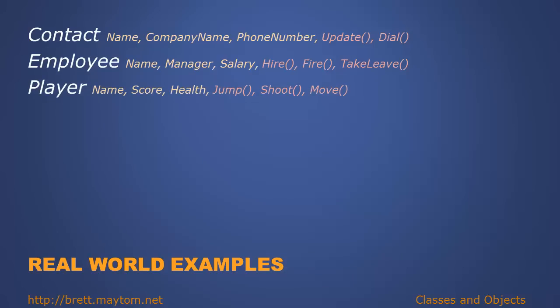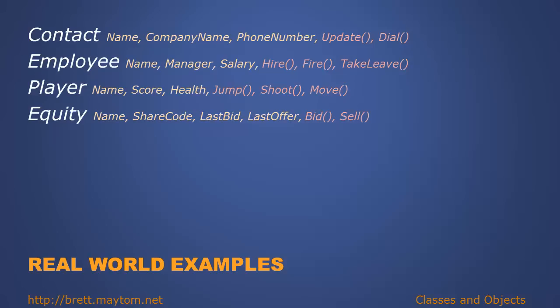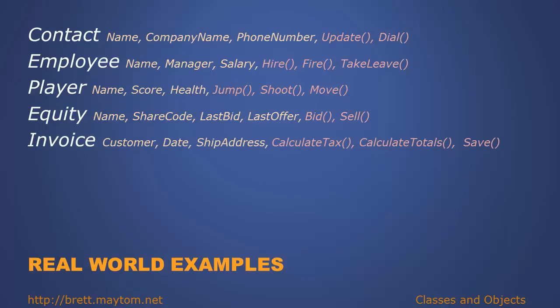We could be looking at a game where we have a player with a name, a score, and their current health, with actions such as jump, shoot, and move. In financial services, we might define an equity with a name, a share code, the last bid price, and the last offer price, with methods to make a bid or sell. We might write a financial application with an invoice containing the customer's name, date, and shipping address, with methods to calculate tax, totals, and persist to disk. We could also create a UI button with width, height, and display text, and a method to handle user clicks.